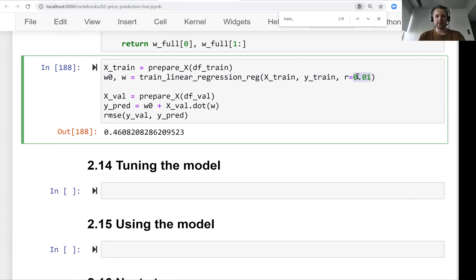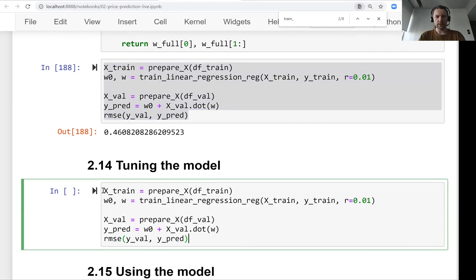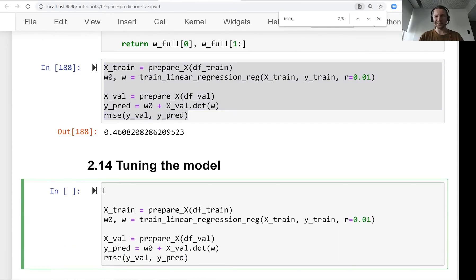Here we notice that this r affects the quality of our model, and what we want to do is find the best value for this r. So what we will do now is use the validation set for finding the best value, and we will just try a bunch of different values for r starting from zero.